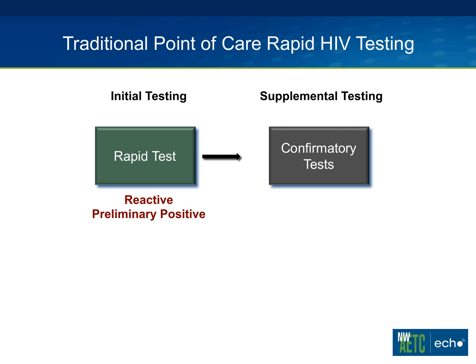We also have the traditional point-of-care rapid testing, which traditionally has been some type of an EIA test, and if that was preliminary positive, you went on and did a supplemental test. Just to confirm: when you do a rapid test — for example, the OraQuick oral swab — if that is reactive, that is not a diagnostic HIV test, that is a preliminary positive.